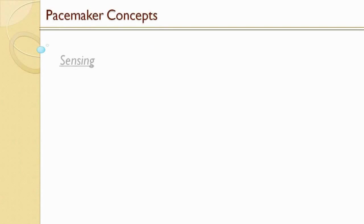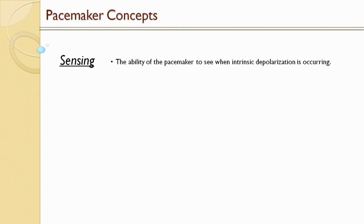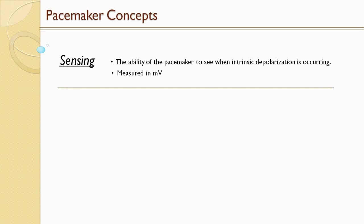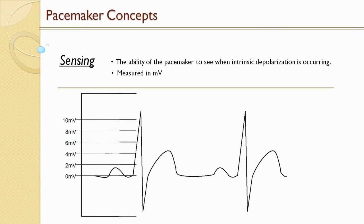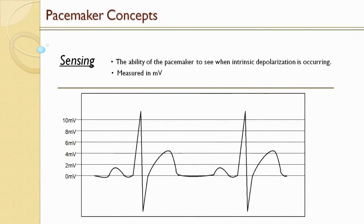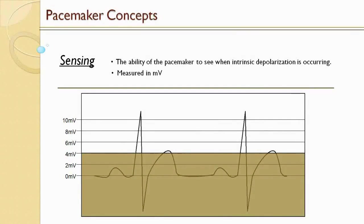Next, we're going to talk about sensing. Sensing is the ability of the pacemaker to see when intrinsic depolarization is occurring, and it's measured in millivolts. If we draw a sensing grid over EKG beats with the baseline at 0, and the pacemaker is programmed to a sensitivity level of 4 millivolts, it means that anything under 4 millivolts the pacemaker won't see — it will completely ignore it. If we reprogram to a new sensitivity of 6 millivolts, all the pacemaker can see is the R wave — everything below 6 millivolts would not be seen.